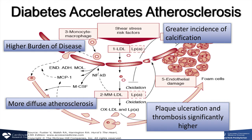Inflammation is thought to be a key driver of progressive atherosclerosis. Patients with diabetes typically have a higher inflammatory environment, leading to higher burdens of atherosclerotic vascular disease with more diffuse disease, more plaque ulceration causing thrombosis — which leads to heart attacks and limb problems — and calcification, which is a difficult problem when trying to open or unclog these arteries.